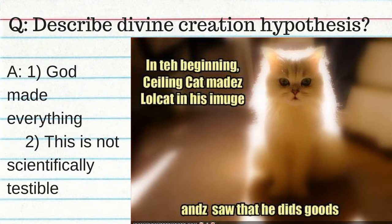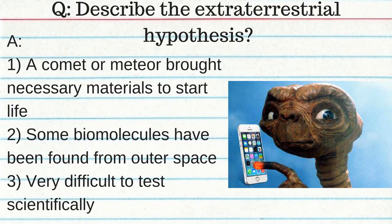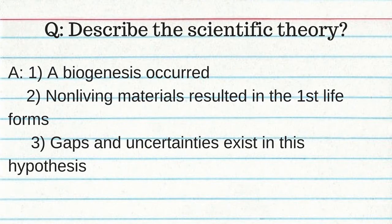Hypotheses about how life began on earth: divine creation — God made everything, not scientifically testable. Extraterrestrial hypothesis — a comet or meteor brought necessary materials to start life; some biomolecules have been found on objects from outer space; difficult or impossible to prove. The heterotroph hypothesis — abiogenesis occurred, non-living materials generated the first life forms, though gaps and uncertainties exist.